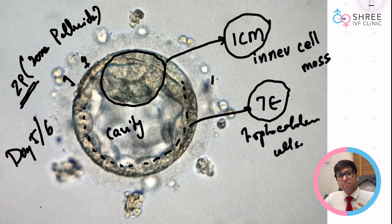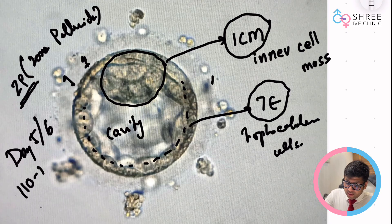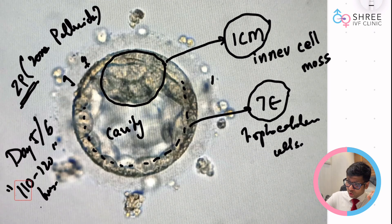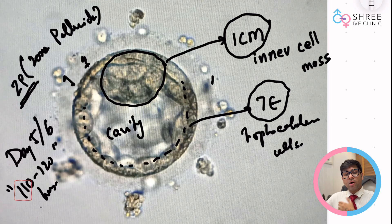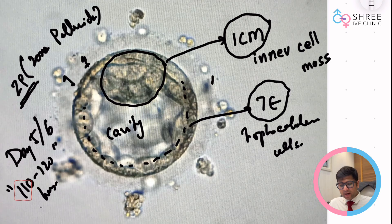Technically, day 5 versus day 6 doesn't matter much as far as implantation is concerned. Just remember that the best embryo is somewhere between 110 to 120 hours post ICSI — that is something important to note and understand. Your biologist or embryologist is going to present this information to you.